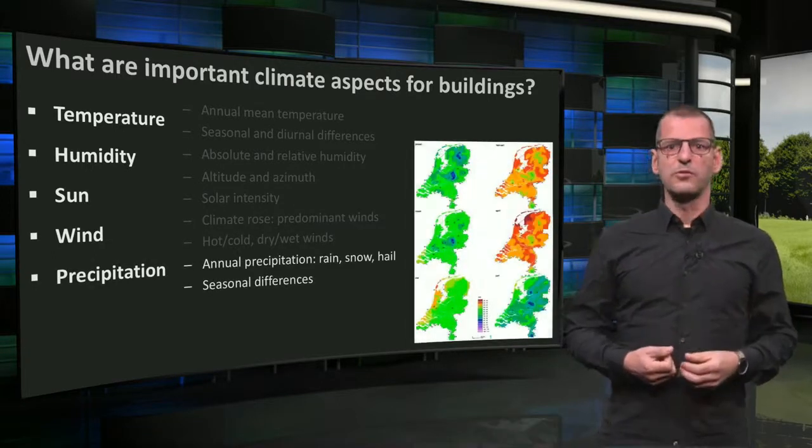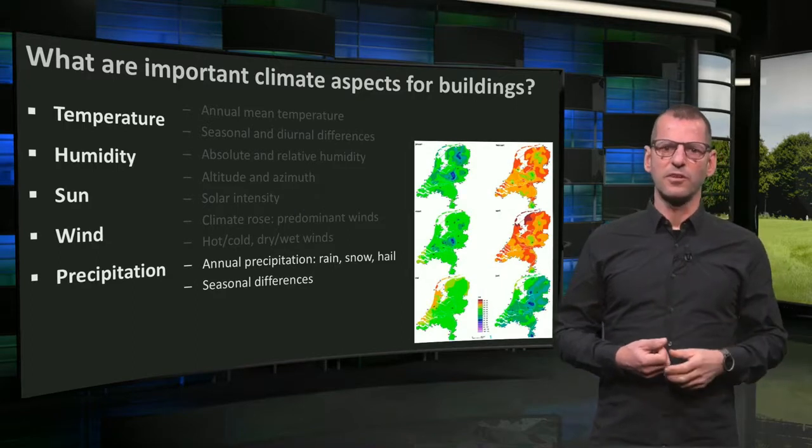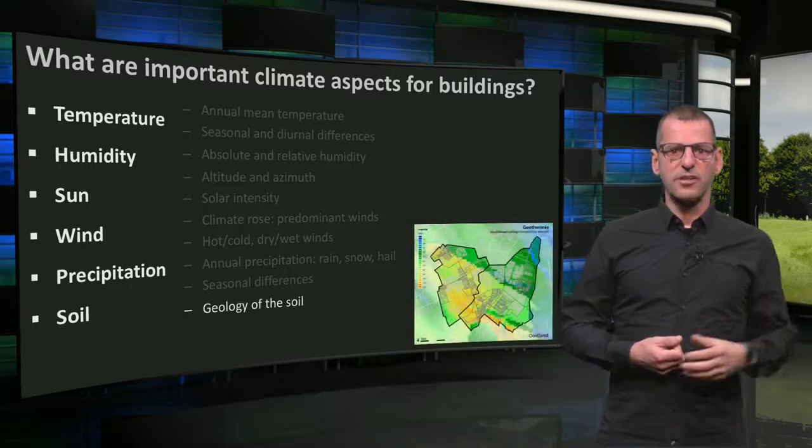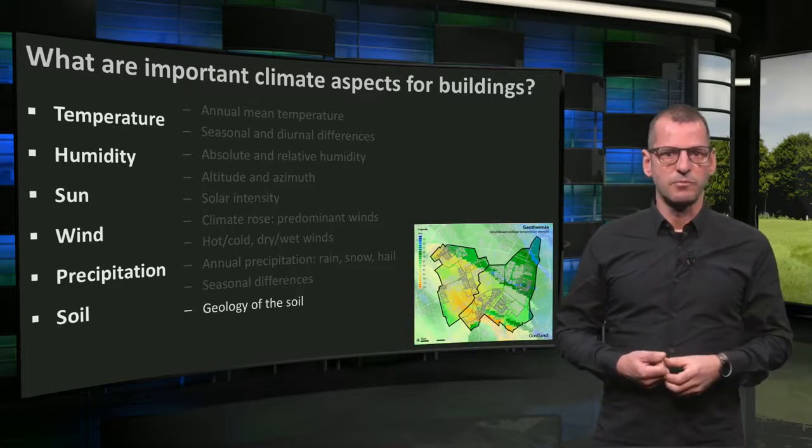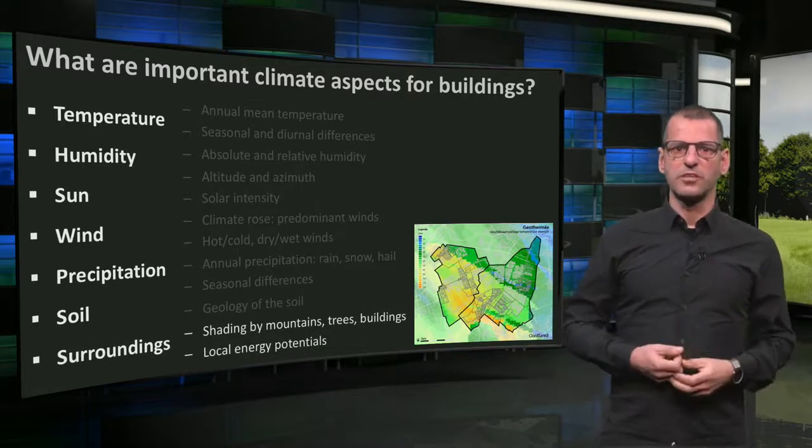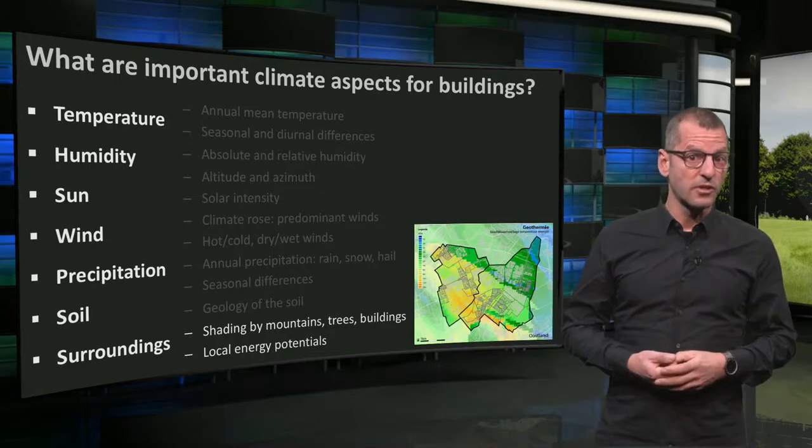Precipitation: Annual values and seasonal differences are important to know. Soil: The underground and its geology define the options to use soil energy. And finally, surroundings: Mountains, trees and buildings can cast shadows onto your building, and there may be different local energy potentials you can utilize.